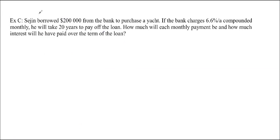Last example. Seijin borrowed $200,000 from the bank to purchase a yacht. This happens a lot where people borrow money from the bank, like a mortgage or some other loan, and they want to pay it back over a certain amount of time. If the bank charges 6.6% per annum compounded monthly, he will take 20 years to pay off the loan. How much will each monthly payment be, and how much interest will he have to pay over the term of the loan?